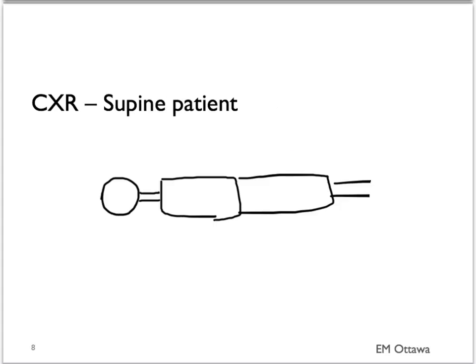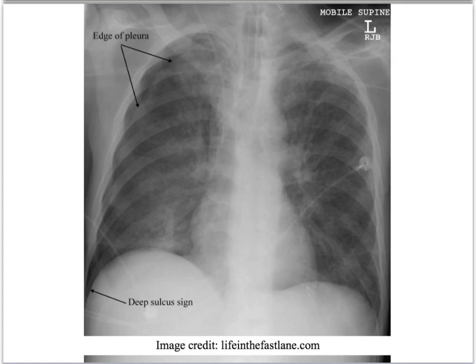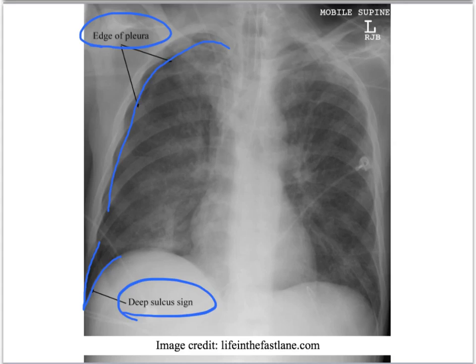What about a supine patient? In a supine patient, the air does not rise up to the apex of the lungs. Instead, it might drift upward to the most superior part of the chest wall, and when shooting the chest X-ray we may not be able to see the pleural line. What we see on a supine chest X-ray instead is a deep sulcus sign — a sharp angle where the diaphragm joins the chest wall. Sometimes in smaller pneumothoraces, the pleura may not be so readily seen.